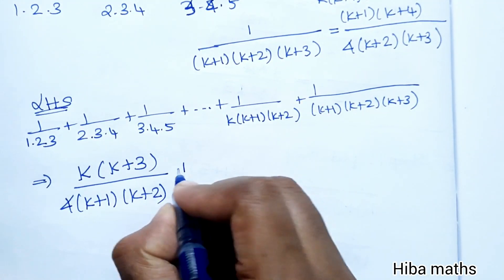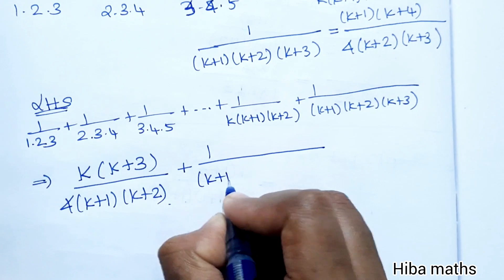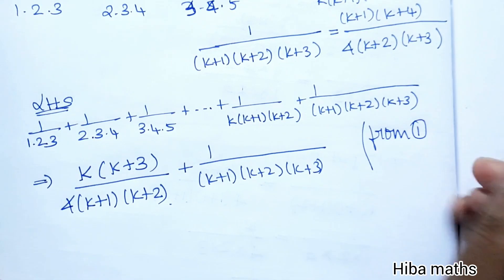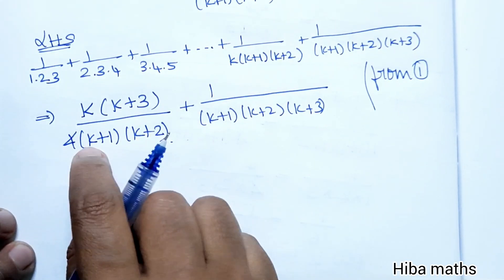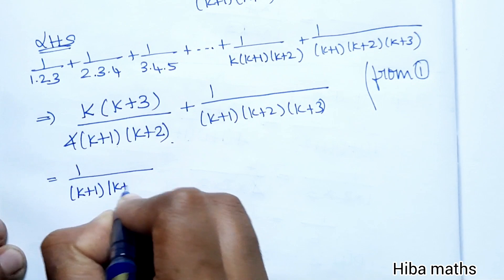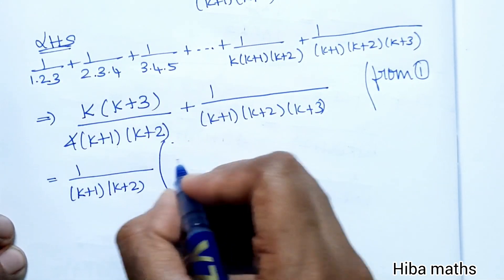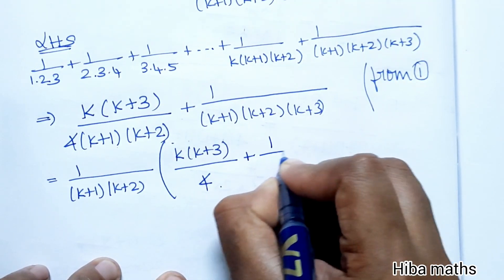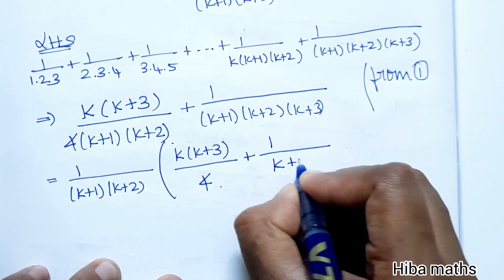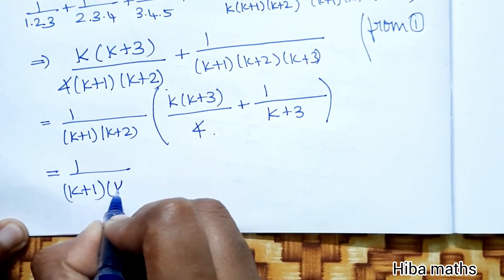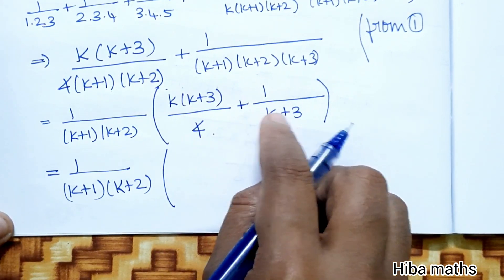The LHS becomes: k(k+3) / [4·(k+1)·(k+2)] + 1/[(k+1)·(k+2)·(k+3)]. Substituting from result 1 into the LHS, we get this combined expression. We can now solve the LHS by cross multiplication.